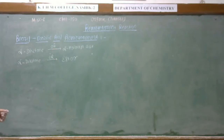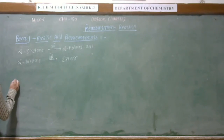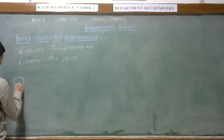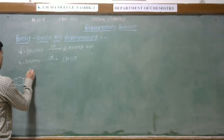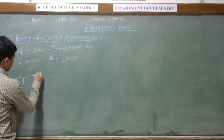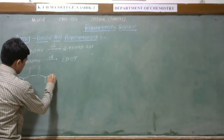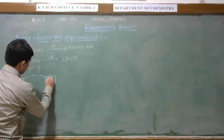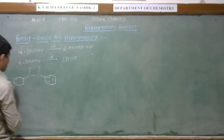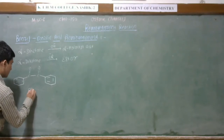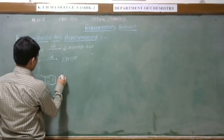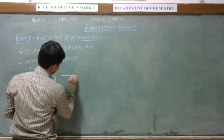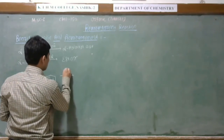A very popular example is benzyl. See the structure of benzyl — this is the benzyl ring with a C double bond O, and this is another benzyl ring with a C double bond O. The name of this compound is benzyl.